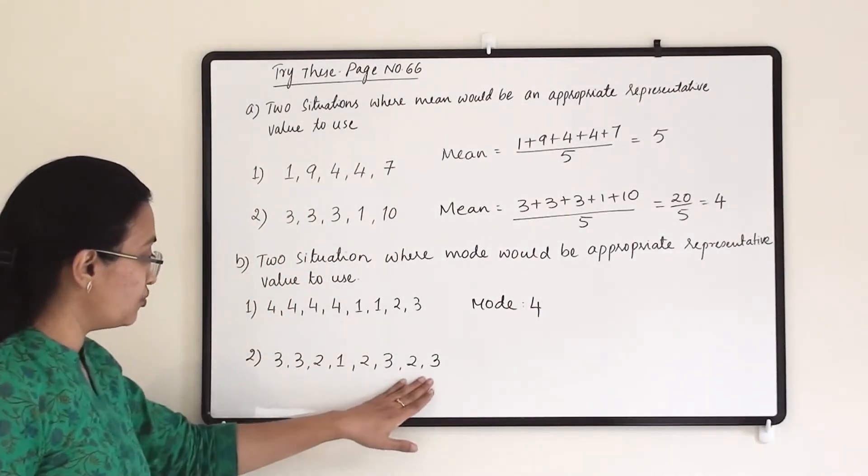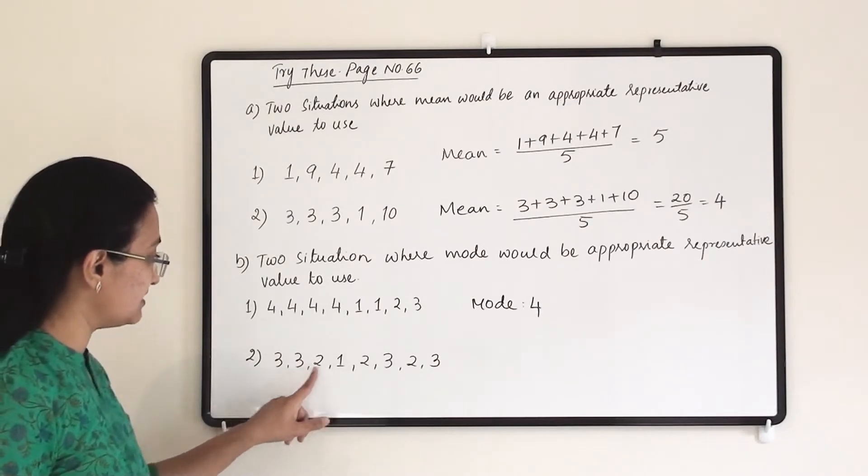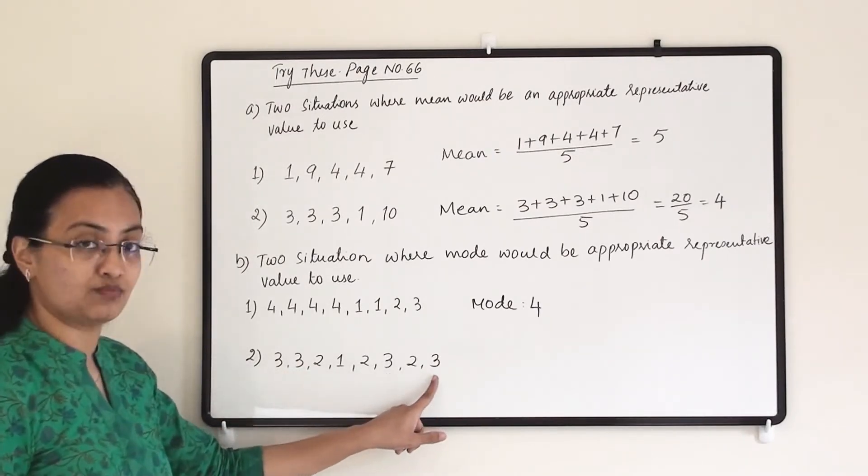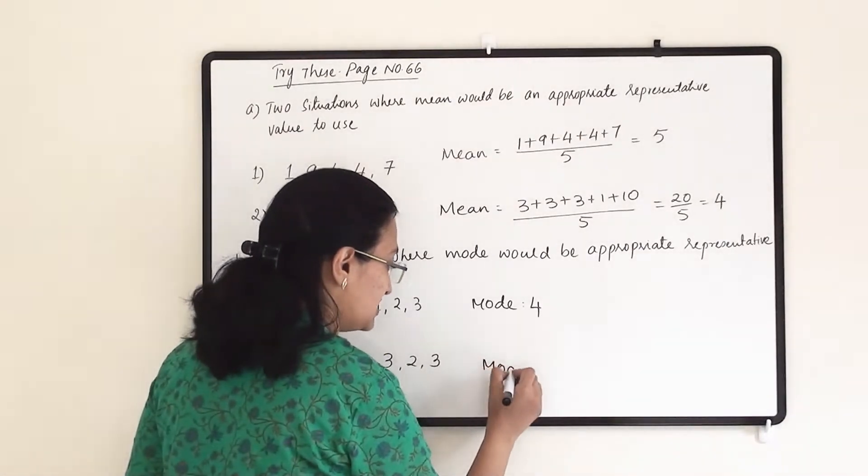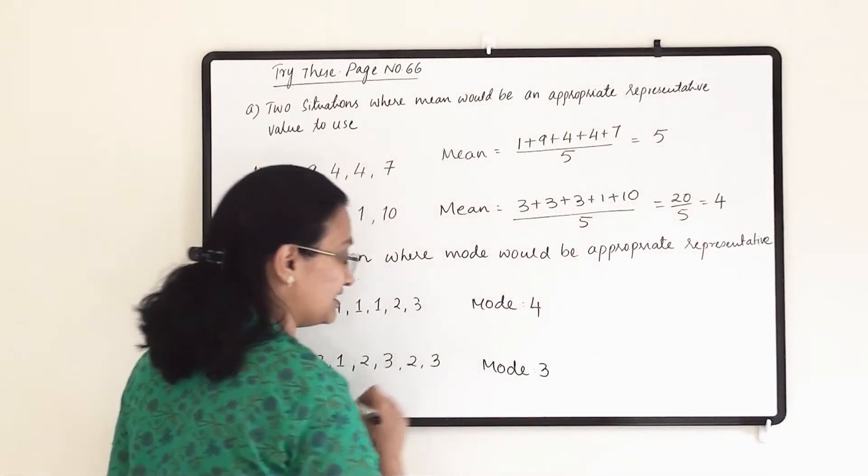Then here if you write mode for this data, you can see that 3 is appearing 4 times. So the correct representative of this data is mode, and that is 3.